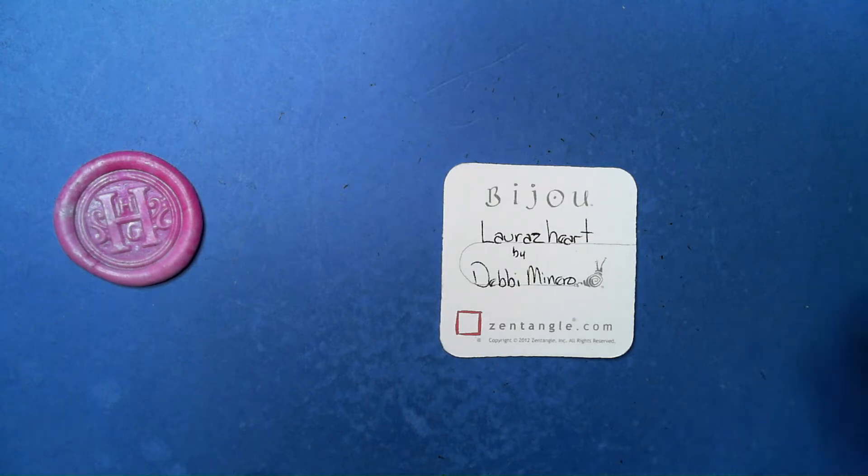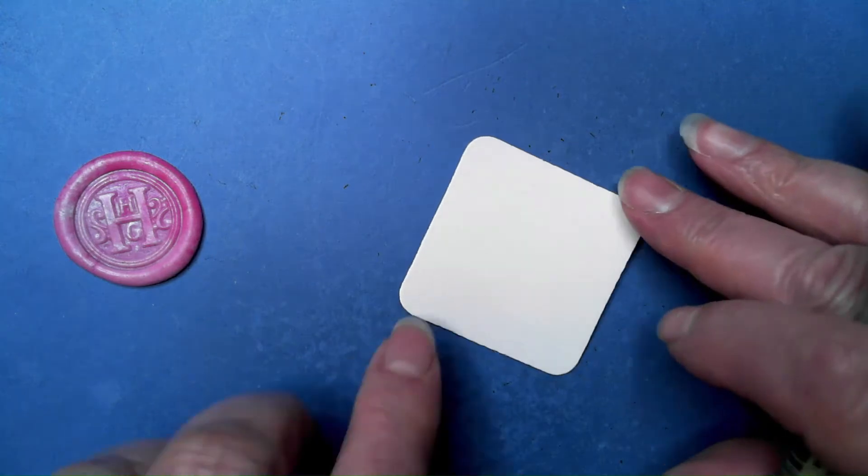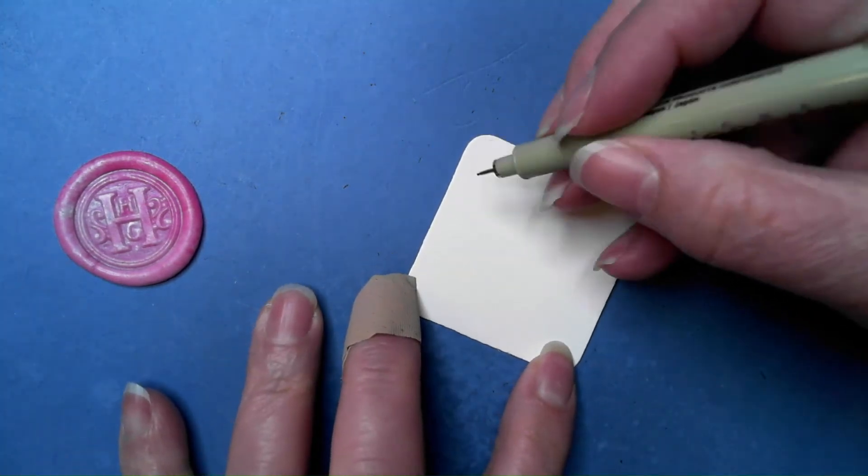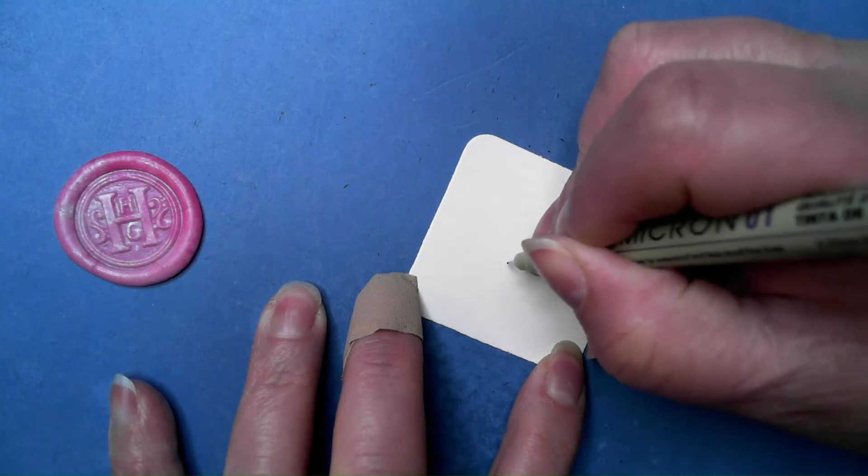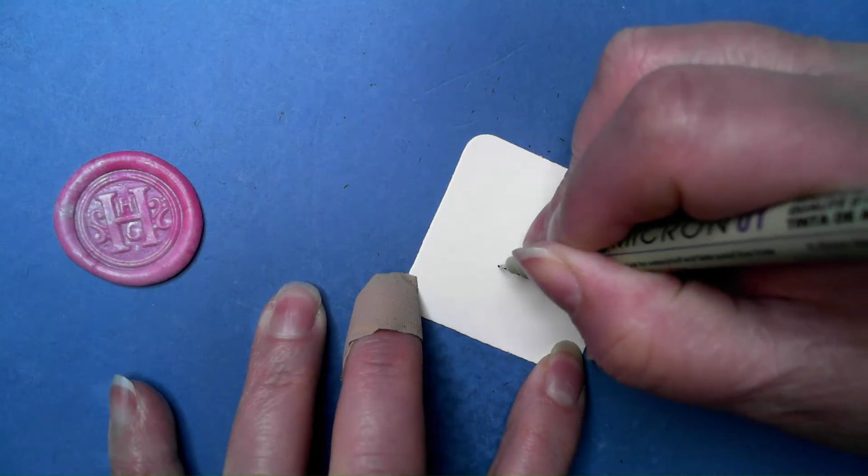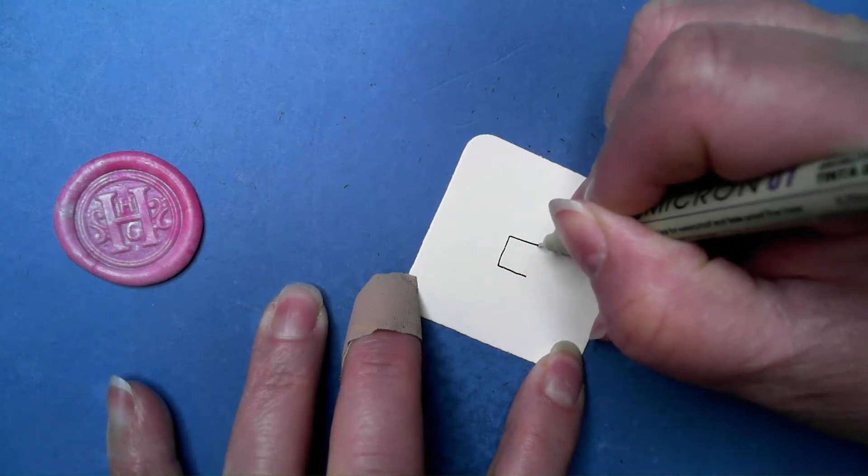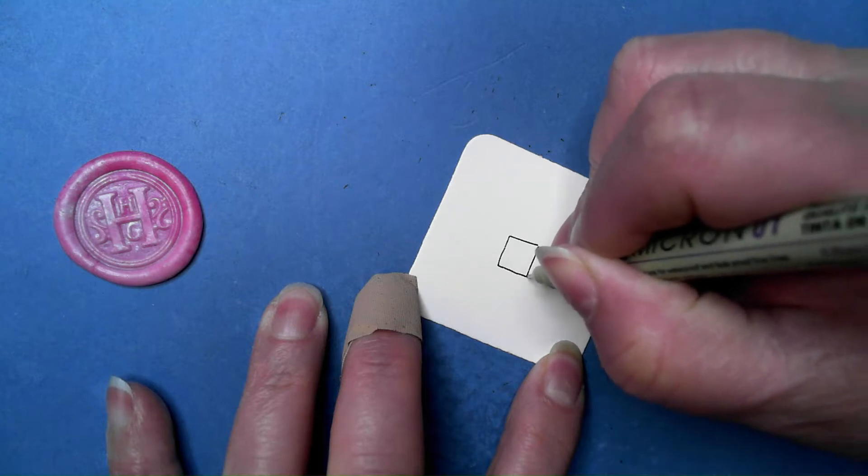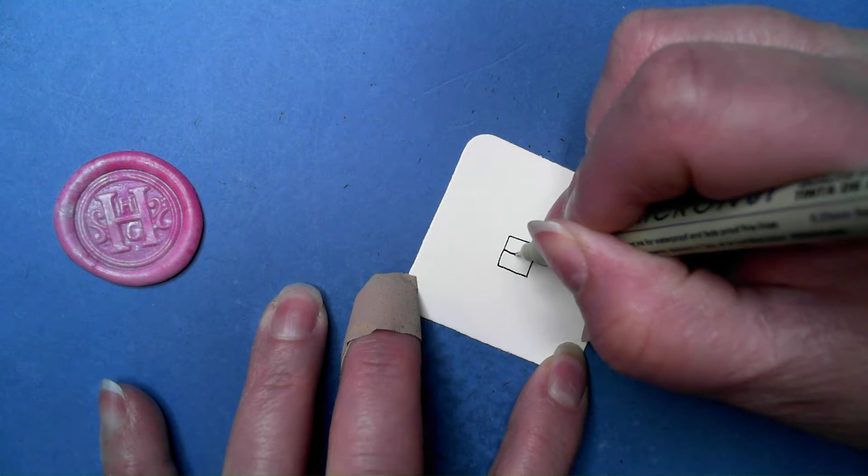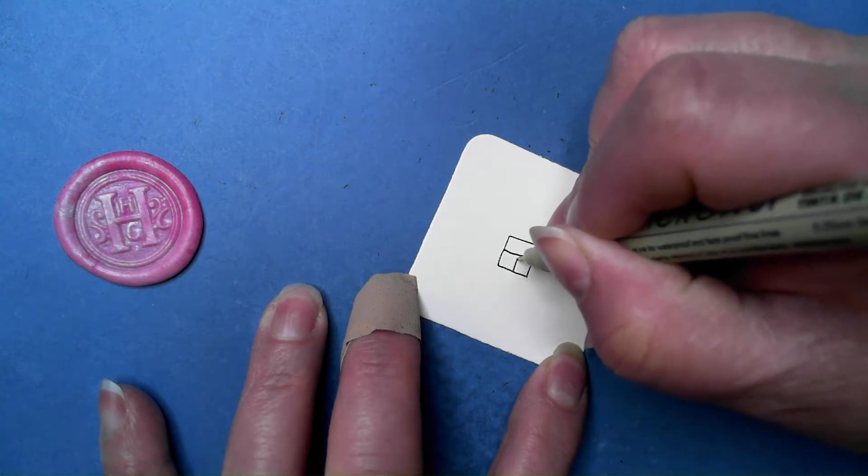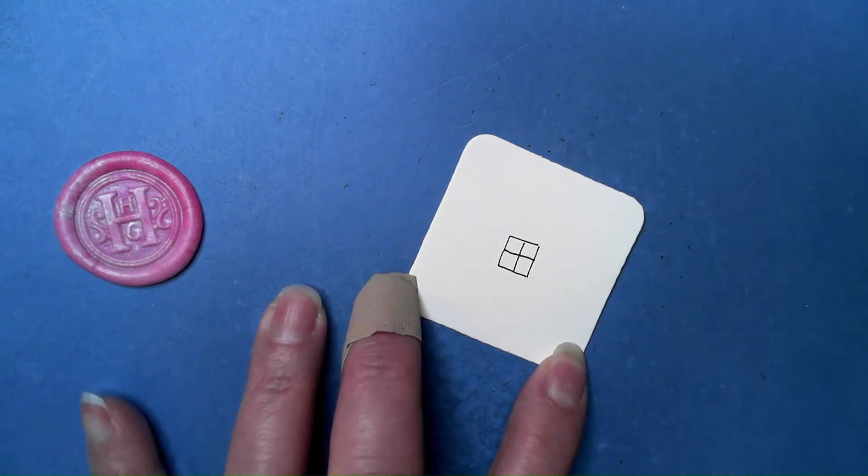All right, so today for Laura's Heart, this one starts with just a box, a little square, and I would place it in the middle of wherever you want it to be because it's going to be the center. Then once you have that, we're going to put a little cross through. It's almost like we're doing a little mini grid for a little square.